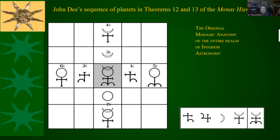Here is that graphic from theorem 13, labeled 'the original monadic anatomy of the entire realm of inferior astronomy.' That's sometimes called interior or lower astronomy also. As I discussed in that theorem, inferior astronomy — whether you're looking at things geocentrically or heliocentrically — does not include some of these planets like Saturn, Jupiter, and Mars.